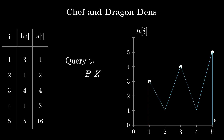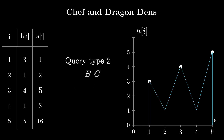In our task, we are given two types of queries. The first type consists of two integers B and K, which changes the value of A[B] to K. So if our query of type 1 was 3 and 5, A[3] would become equal to 5. The second type of query consists of two integers B and C. For queries of this type, we need to find the maximum value of a journey from B to C, or print -1 if such a journey does not exist.